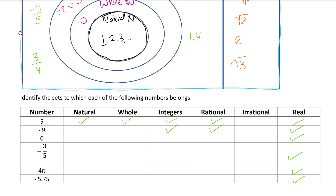Zero is not natural because it's not one of the counting numbers, but it is whole — whole includes zero — which also makes it an integer. It's rational because we can write it as a fraction, and it's real. Negative three-fifths is not a natural, whole, or integer — those require whole numbers.